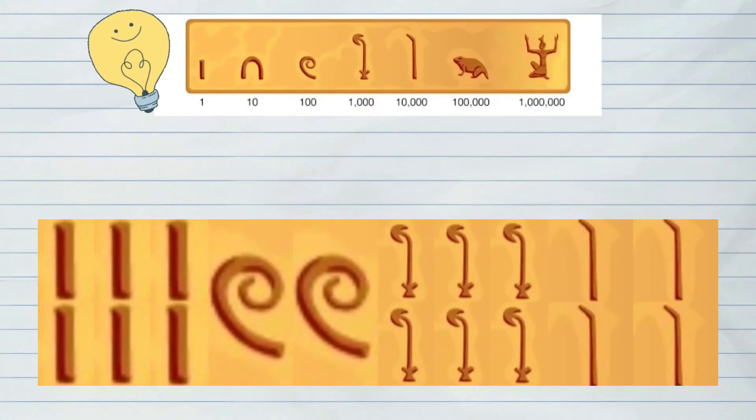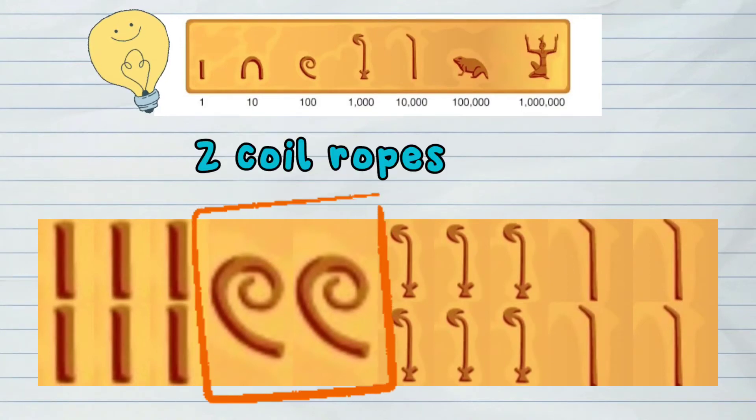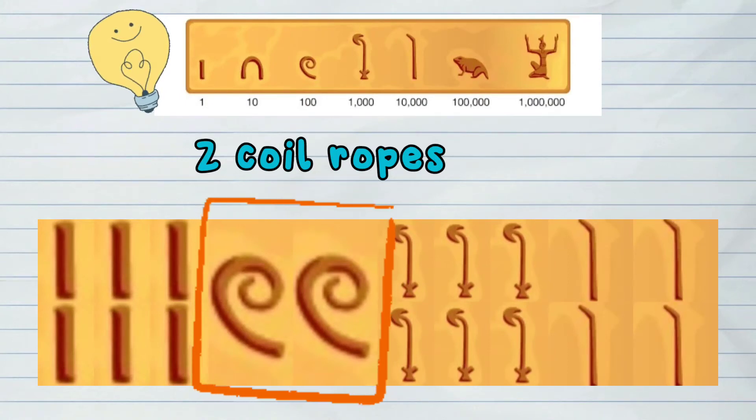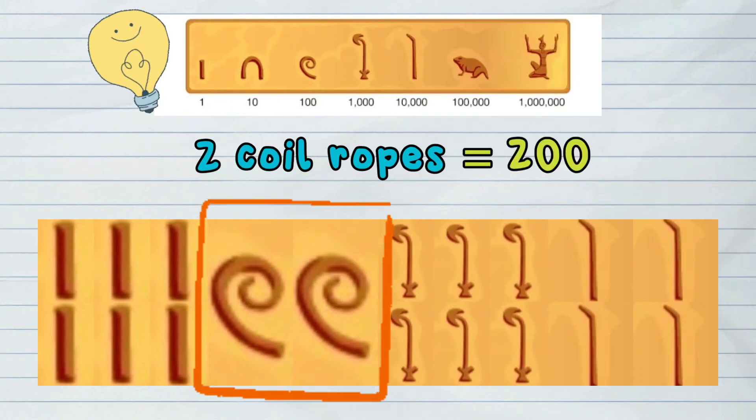Next, we can see 2 coil ropes that is 100 each. So this equals 200.